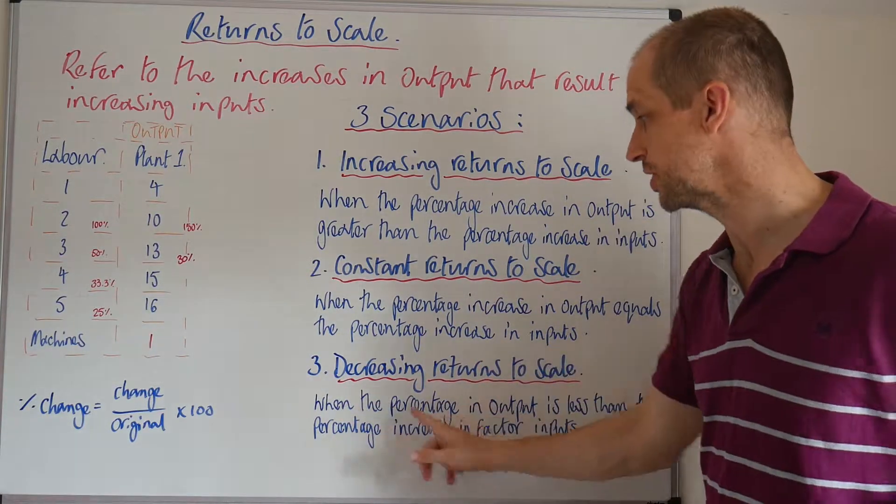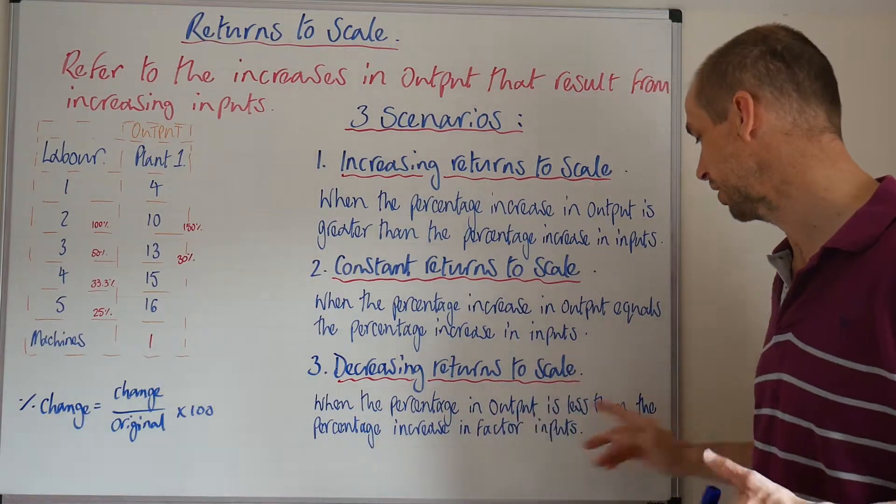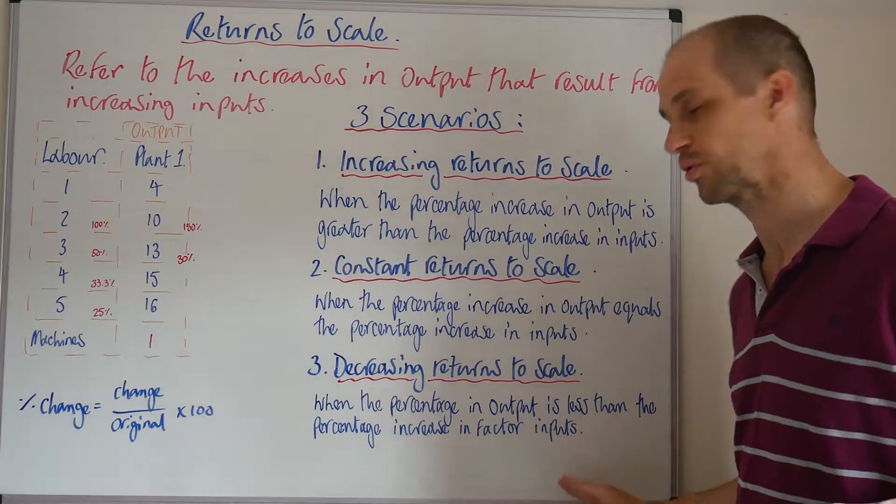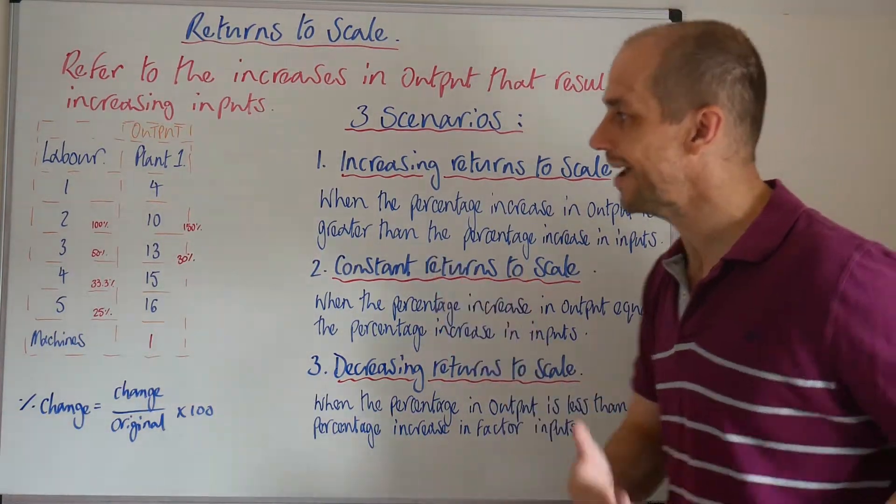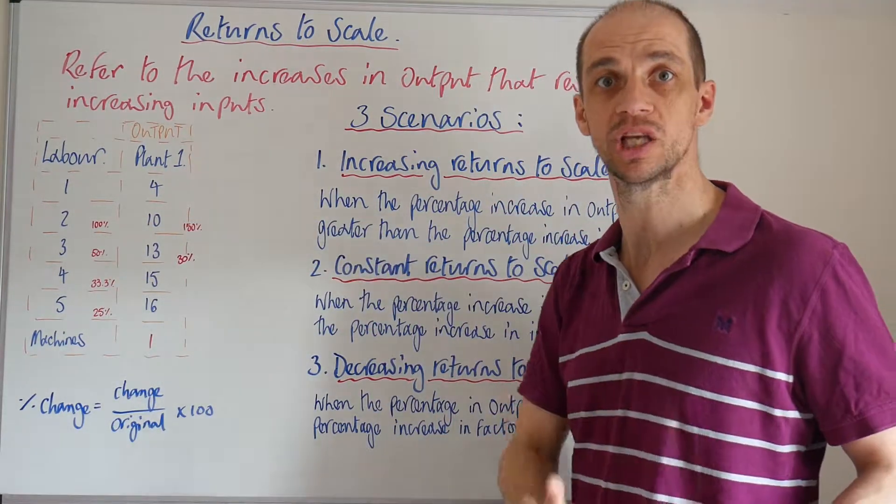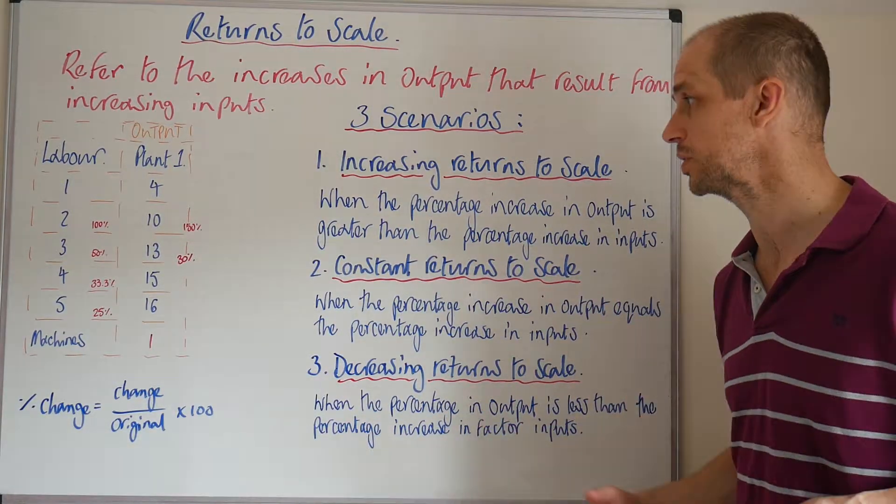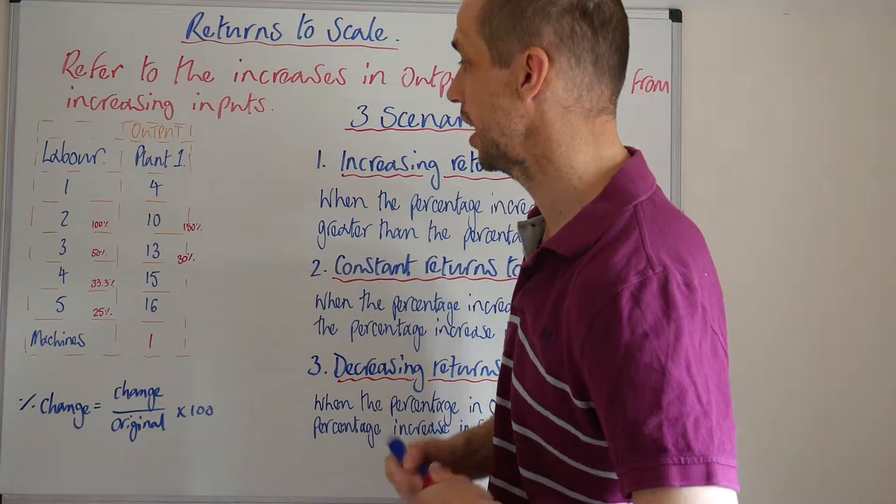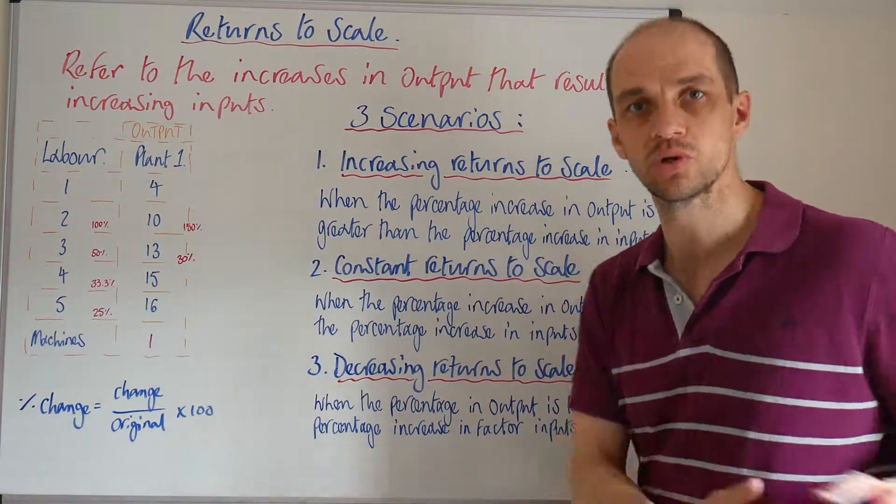Decreasing returns to scale is when the percentage increase in output is less than the percentage increase in factor inputs. So here you're adding more labour but you are not getting that same return in terms of the actual overall output generated by those labourers. We can see that setting in here. And once it sets in, it's going to continue.